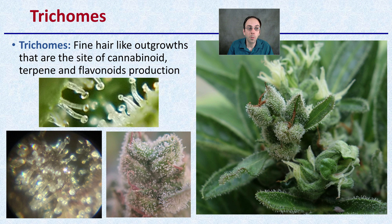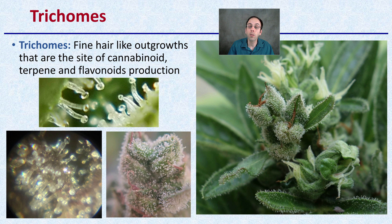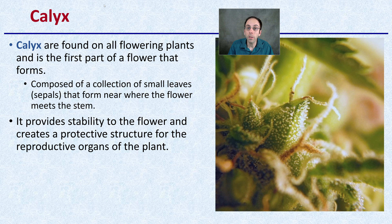Then we get to those trichomes. They are hair-like outgrowths that are the site of cannabinoid, terpene, and flavonoid production. As we zoom in closer, you can see they're clear to whitish mushroom-like structures. This is where you'll find your cannabinoids, terpenes, and flavonoids — they're condensed and stored within the plant in these structures.